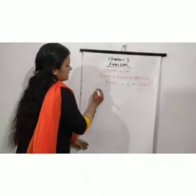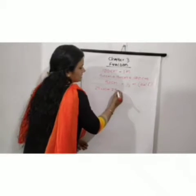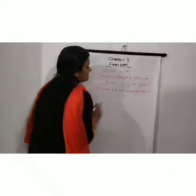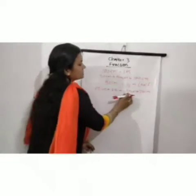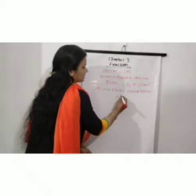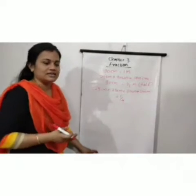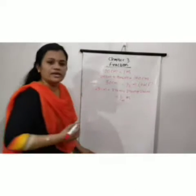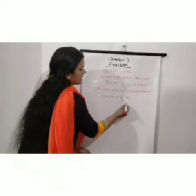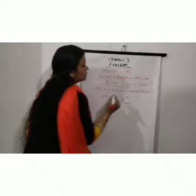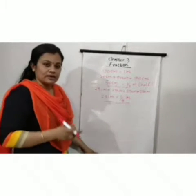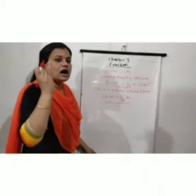Then we can write 25 centimeters plus 25 centimeters plus 25 centimeters plus 25 centimeters. How many 25 centimeters? Four 25 centimeters. This is the 1/4 part of 100 centimeters. This is 1/4 meter. So 25 centimeters equals 1/4 meter. And 50 centimeters equals half a meter.